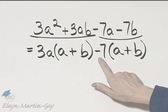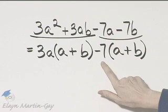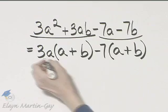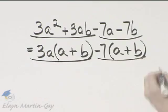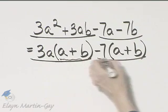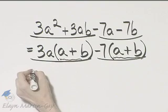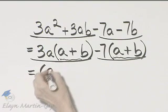And you can check by multiplying. Negative 7 times a, that's negative 7a. Negative 7 times b, negative 7b. What am I looking for here? I'm looking for a common factor in these two terms. And there is a common a plus b.